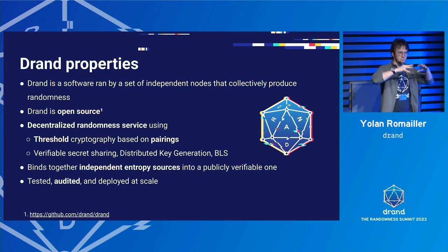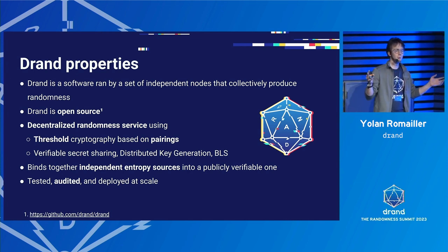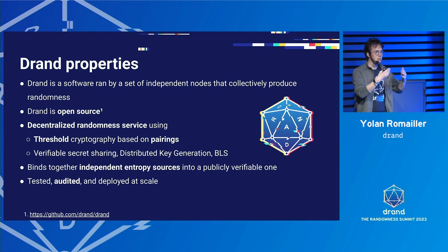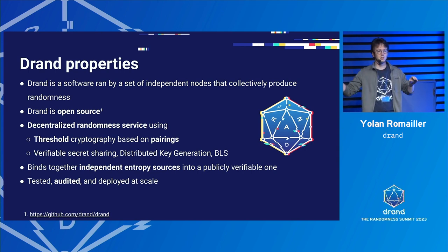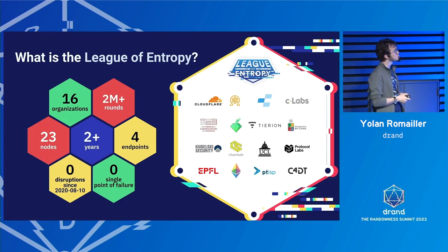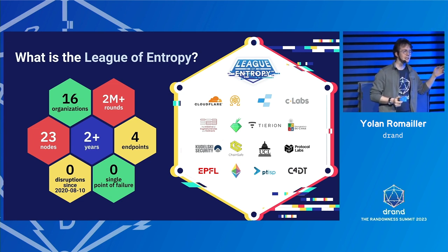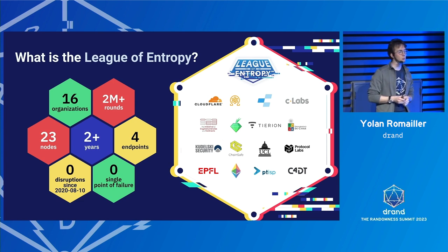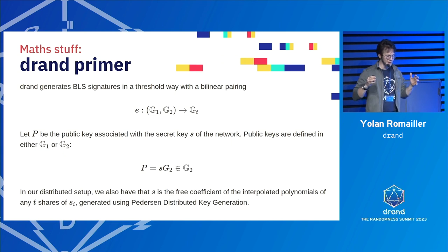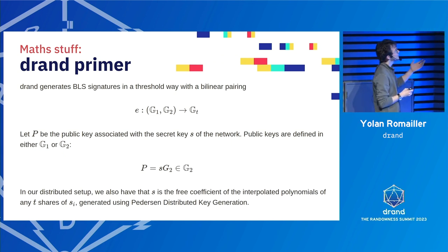Once we have a very random group secret key and its corresponding public key, we can verify new beacons, and all new beacons are predetermined by that secret key. Drand has been running in production since around 2019 — well, not in full production in 2019, but it was launched by the League of Entropy in 2019 and the mainnet launch was in 2020, and since then we've had 100% uptime, as Patrick mentioned, which is pretty good.